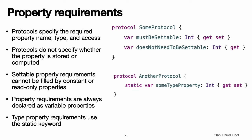Property Requirements. A protocol can require any conforming type to provide an instance property or type property with a particular name and type. The protocol does not specify whether the property should be a stored property or a computed property — it only specifies the required property name and type. The protocol also specifies whether each property must be gettable or gettable and settable. If a protocol requires a property to be gettable and settable, that property requirement cannot be fulfilled by a constant stored property or a read-only computed property. If the protocol only requires a property to be gettable, the requirement can be satisfied by any kind of property. Property requirements are always declared as variable properties, prefixed with the var keyword.